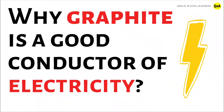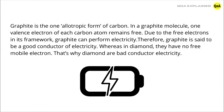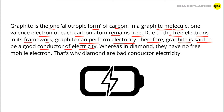Why Graphite is a Good Conductor of Electricity. Graphite is one allotropic form of carbon. In a graphite molecule, one valence electron of each carbon atom remains free. Due to these free electrons in its framework, graphite can conduct electricity. Therefore, graphite is said to be a good conductor of electricity.